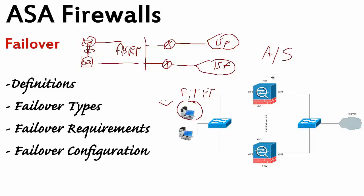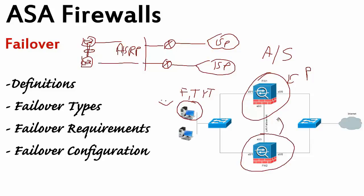In Active/Standby, we decide: you are my primary firewall — you're the boss. The standby watches it. If the primary goes down, or an interface goes down, or it becomes unreachable, the standby says: 'Now I am your firewall, I am your manager. Please use me to browse the internet, please use me to access a server connected over here.'